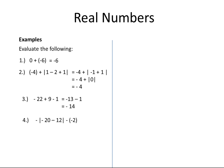Minus the absolute value of minus 20 minus 12 minus minus 2. We observe that there is a minus sign outside the absolute notation — this minus sign cannot be dropped. It has to be copied in our next step, and we need to change this minus and minus to plus. Then we simplify the value inside the absolute notation. This is equal to minus the absolute value of minus 32 plus 2, because minus and minus becomes plus, and minus 20 minus 12 is minus 32.